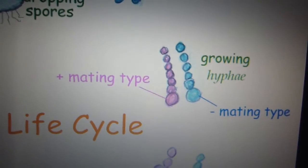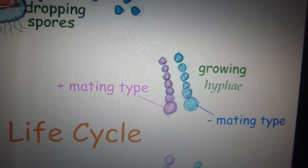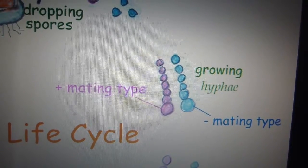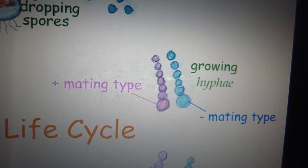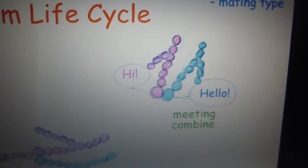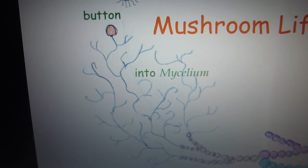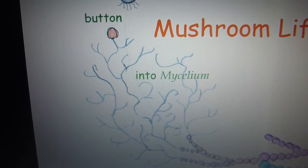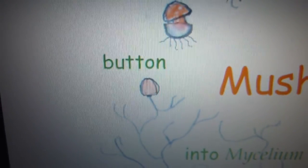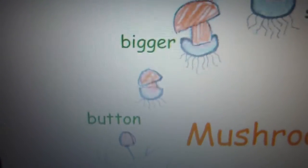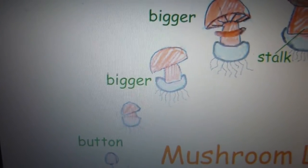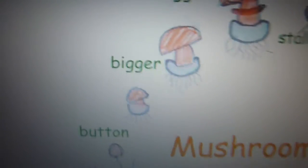The spore germinates and grows into hyphae. When mating type plus and mating type minus meet, they combine and continue growing into a mycelium. A button that resembles an egg grows. When the button gets bigger, it opens like the hatching of an egg and forms a cap and a stalk.